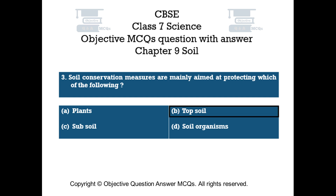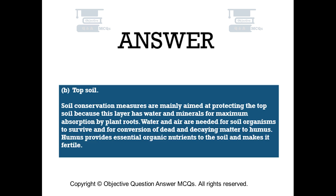The right answer is Option B — Topsoil. Soil conservation measures are mainly aimed at protecting the topsoil because this layer has water and minerals for maximum absorption by plant roots. Water and air are needed for soil organisms to survive and for conversion of dead and decaying matter to humus. Humus provides essential organic nutrients to the soil and makes it fertile.